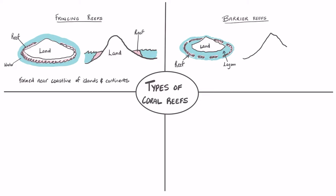Sometimes at the shallowest point, the barrier reefs can reach the surface of the water, forming a barrier to navigation so that boats aren't able to pass.